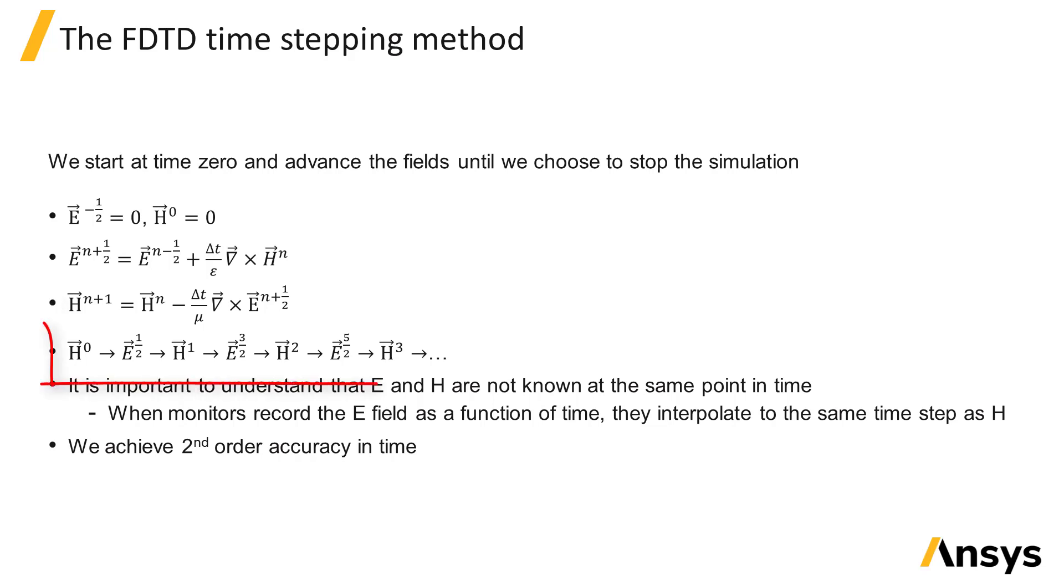In this way, we can leapfrog the update of E, then H, then E, and so on until we choose to stop the simulation. It is important to understand that we do not ever calculate E and H at the same point in time. They are offset by one half time step. In fact, if you record the E field as a function of time with a monitor and plot it, the monitor will interpolate the original FDTD E fields to the same time step as H, so you may never notice this offset.